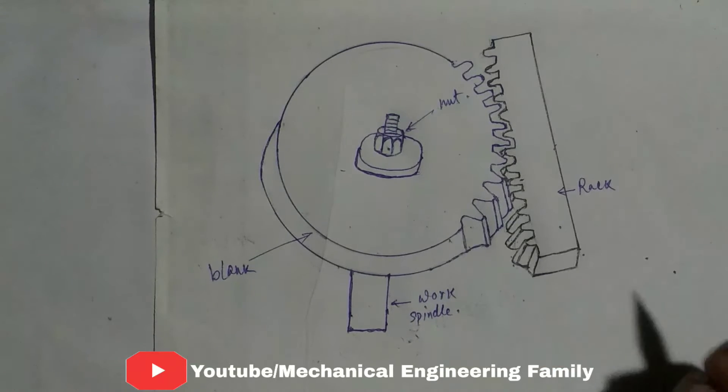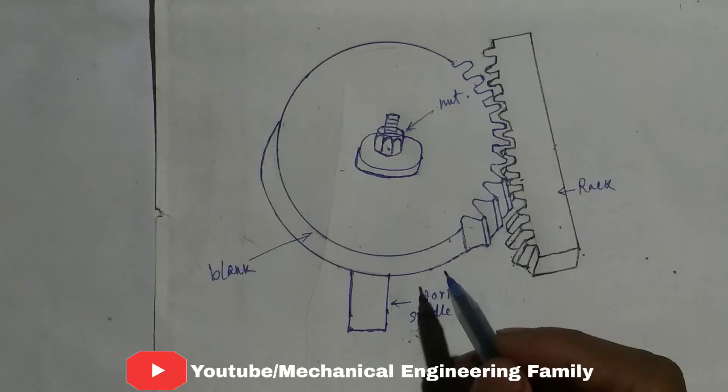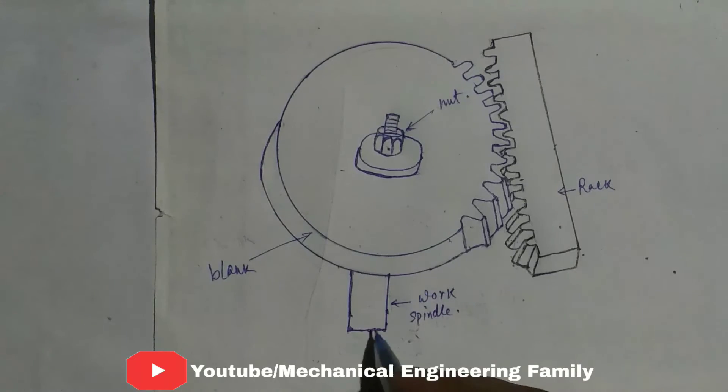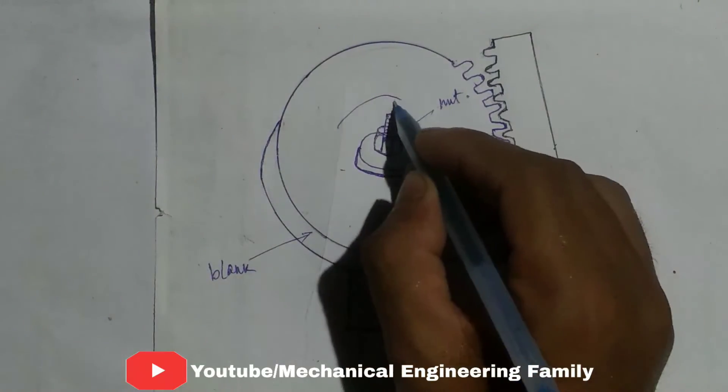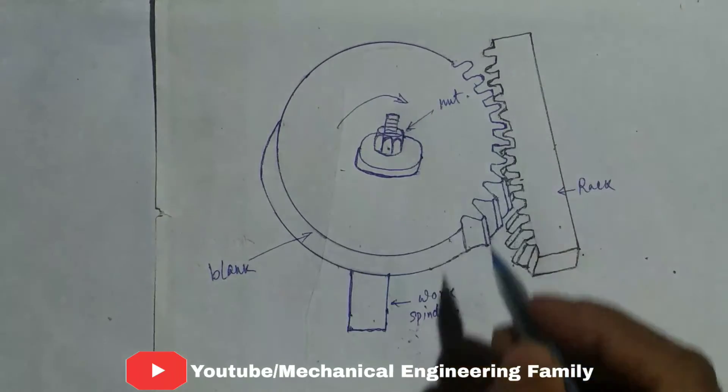Now, how it works. This blank is rotated by the rotation of the work spindle. Here the work spindle rotates.